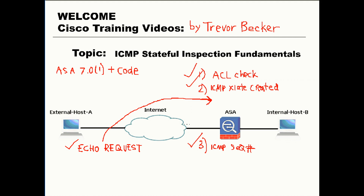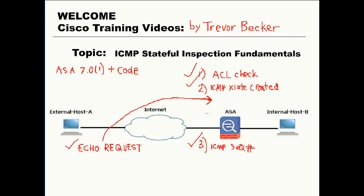The echo reply will only be sent through this temporary inspection engine connection if the ICMP sequence number matches the corresponding echo request. The ASA will only allow one echo reply for every echo request, and it will only send that echo reply if it matches the ICMP sequence number. It only gets one chance, and if that echo reply outbound response does not match the echo request parameters, the ICMP inspection engine temporary connection is torn down, and the xlate stays active for 30 seconds before it's torn down.